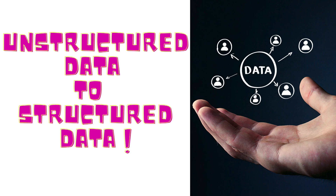Unstructured data is typically text-heavy, but may contain data such as dates, numbers, and facts as well. Structured data refers to data with a high level of organization. In other words, structured data is the data which conforms to a data model, has a well-defined structure, follows a consistent order, and can be easily accessed and used by a person or a computer program. Structured data is usually stored in a well-defined schema such as a relational database.